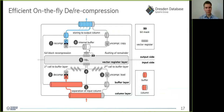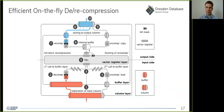That is why we buffer the output data of the vector register layer in a cache-resident buffer in the output-side buffer layer, and only once this buffer is full do we trigger the recompression procedure, which directly stores its compressed output to the output column. Once all input data elements have been processed, we flush remaining data elements to the uncompressed remainder of the output column. We can implement this procedure economically for different logical operators and different compressed input/output formats, because only the vector register layer depends on the logical operator and only the buffer layer depends on the input/output formats. We implement all three layers as separate components and stitch them together using C++ template metaprogramming, forcing the compiler to inline repeated calls to the vector register layer.